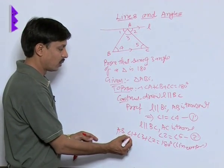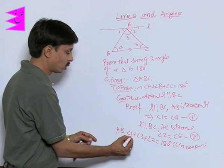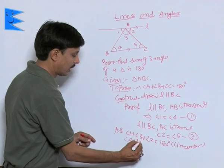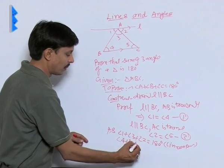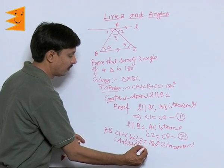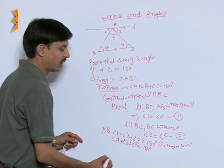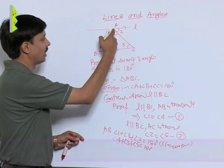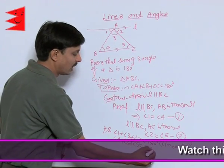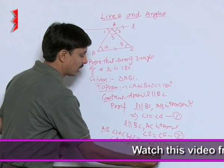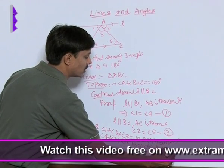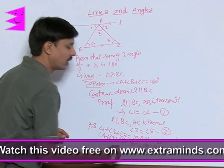Now, I find angle 1 is equal to angle 4. So, in place of angle 1, angle 4, then angle 3, then 2 is replaced by 5. So angle 4 plus angle 3 plus angle 5 is equal to 180 degrees. But 3, 4, 5 are named as A, B, C. So, finally, I can say that angle A plus angle B plus angle C is equals to 180 degrees.